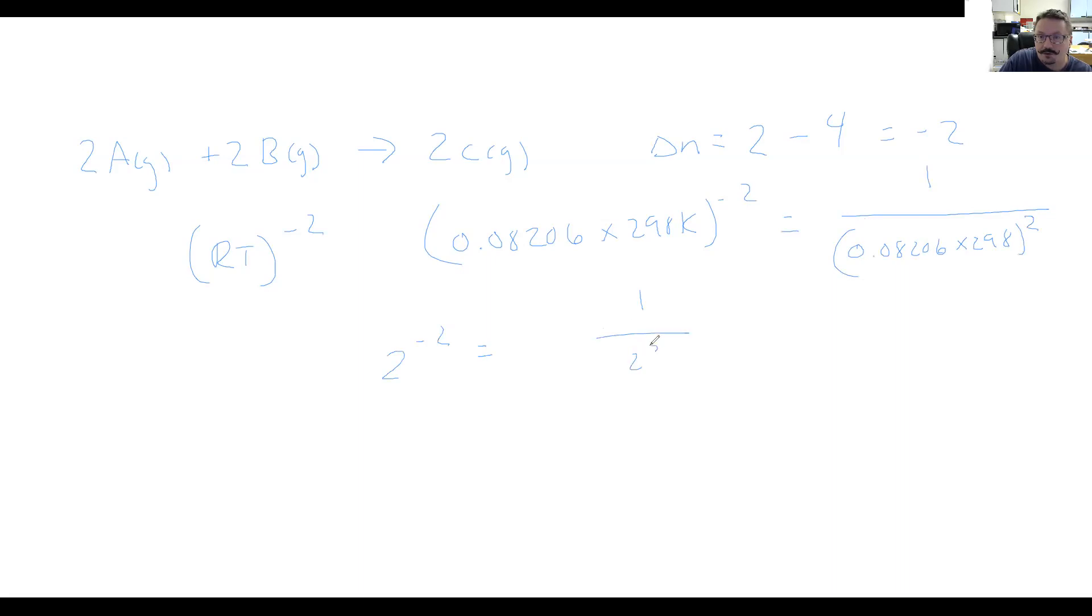If it were a positive value, you would leave it on the top. So if delta N were 2, then you would just have 0.08206 times 298 squared. You wouldn't need to move it to the bottom. But that's how you want to treat that. Like I said, it's not the same thing as 1 times 10 to the negative 1 or 1 times 10 to the negative 2. It's actually raised to the negative 2 power or negative 1, whatever it happens to be.